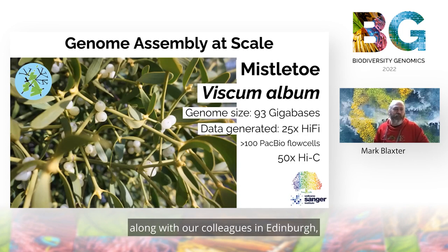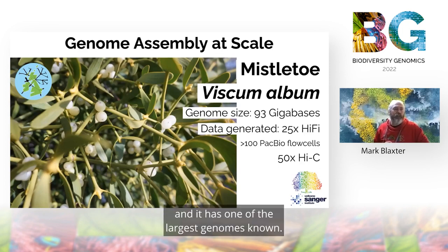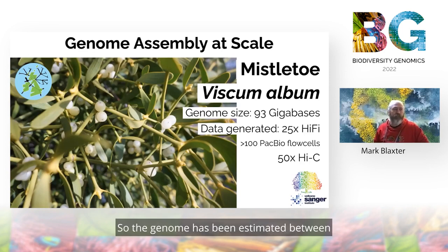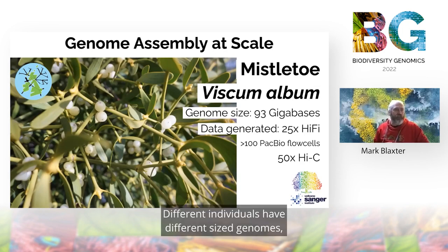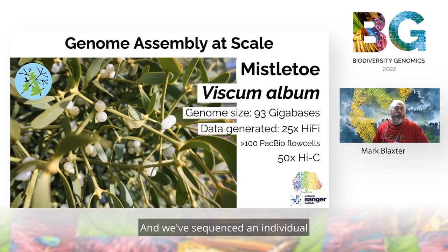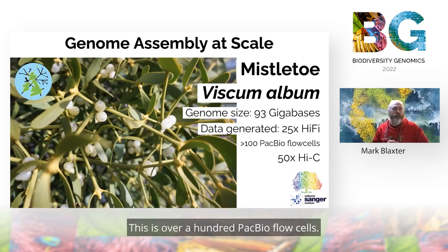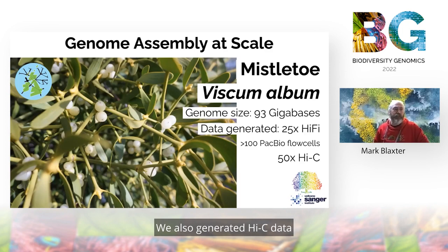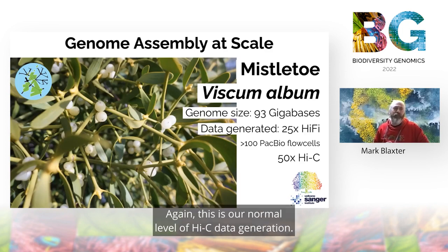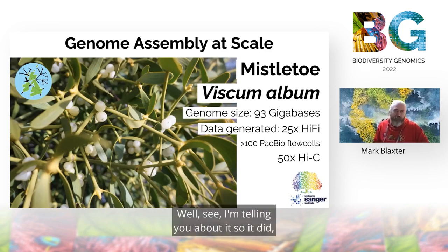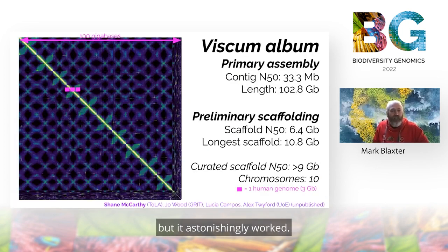So we challenged ourselves, along with our colleagues in Edinburgh, to sequence the genome of mistletoe. Mistletoe is a parasitic plant and it has one of the largest genomes known — estimated at between about 90 and 100 gigabases, that's 30 times the human genome, and different individuals have different sized genomes, which is interesting in itself. We sequenced an individual with an estimated genome size of 93 gigabases. We generated 25-fold coverage in HiFi data — over 100 PacBio flow cells — and Hi-C data to about 50-fold coverage, both at our normal levels. And it astonishingly worked.